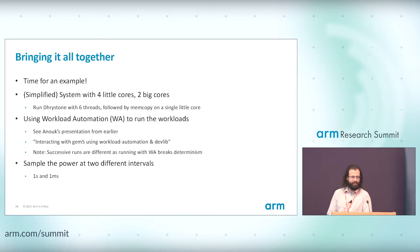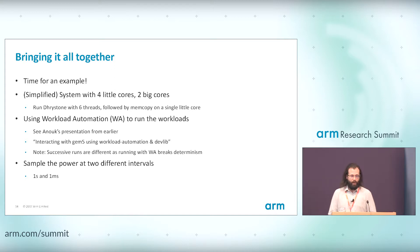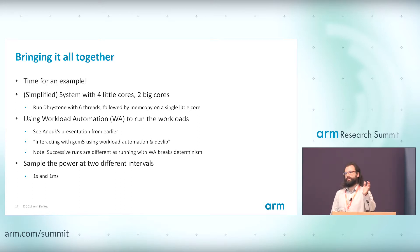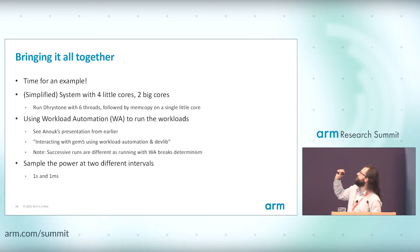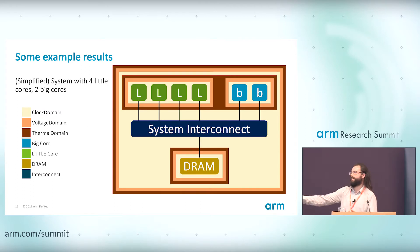Here's a quick example of how to bring it all together — modelling one of the ARM test systems. There's an ARM platform called Juno with four little cores and two big cores. We model something similar in GEM5 to see what power numbers we get. We use workload automation to run these experiments — mentioned in an earlier talk. One thing to note is that workload automation runs are non-deterministic, meaning each run will be different because you're interacting with the host system.